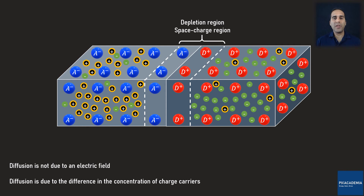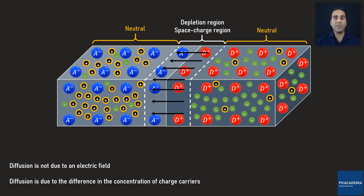Since this region is depleted from any charge carriers, it is called the depletion region or space charge region. The rest of the semiconductors remain neutral. Therefore, we can identify three regions: two neutral regions and one depletion region. The uncompensated ionized atoms in the depletion region form an electric field directed from the N semiconductor to the P semiconductor, and this electric field resists the diffusion of holes into the N semiconductor and of electrons into the P semiconductor.